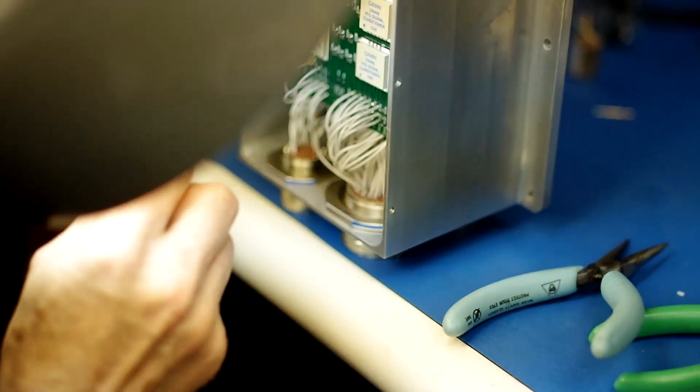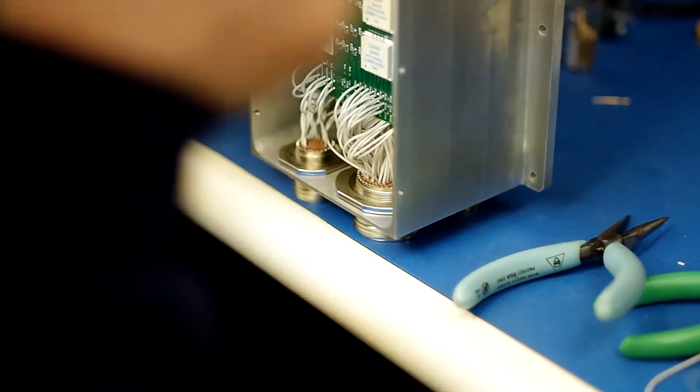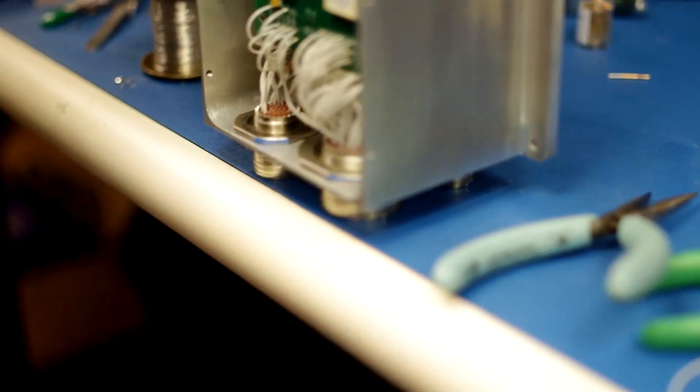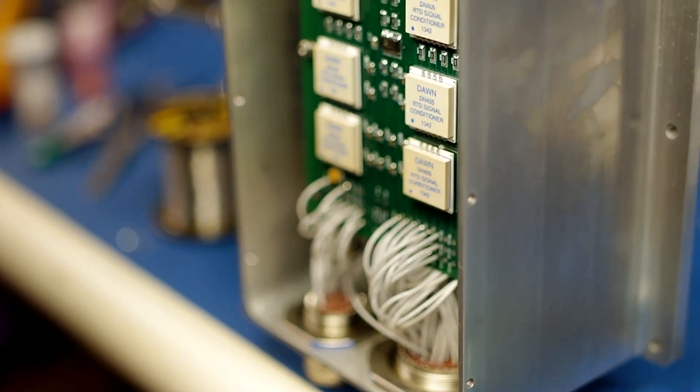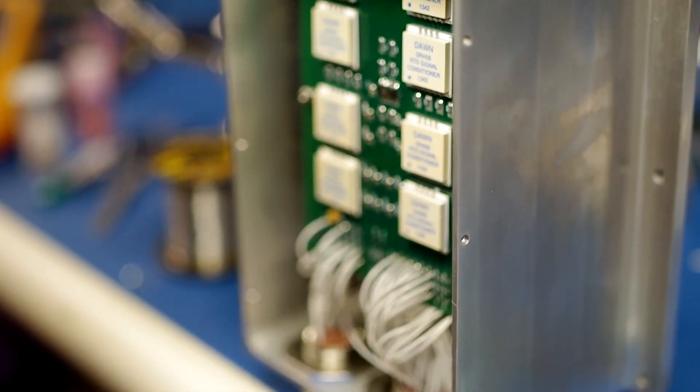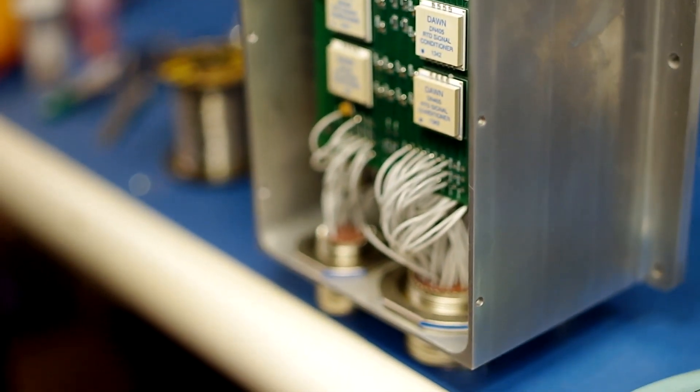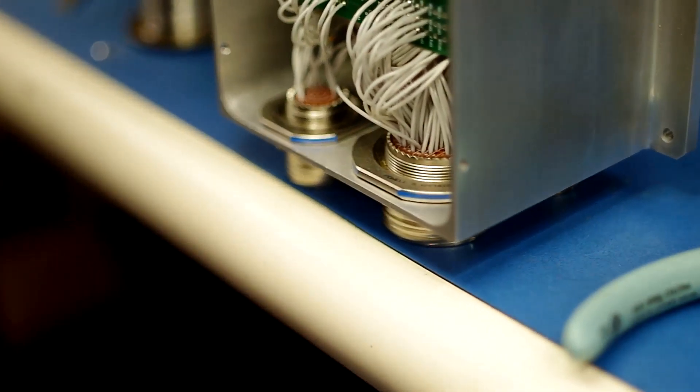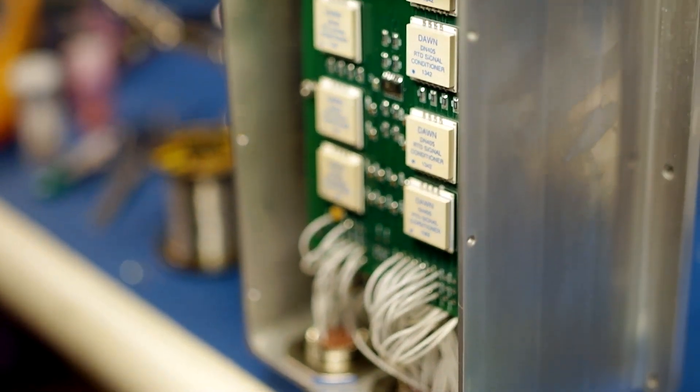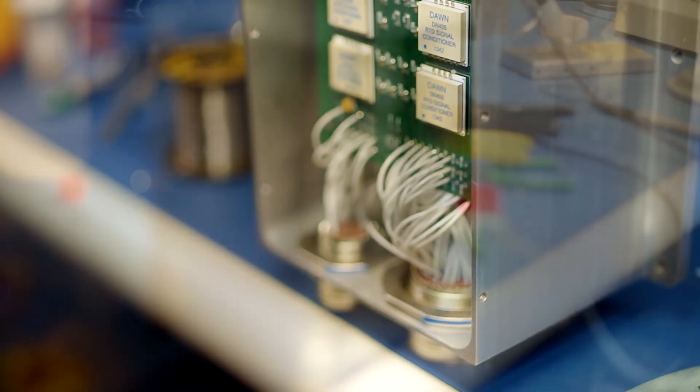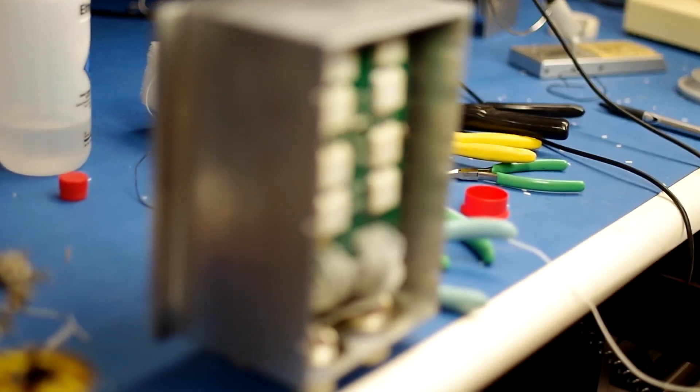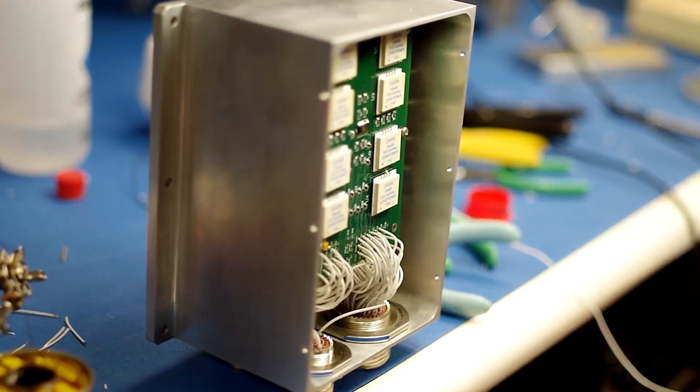Basically what I'm working on, this box here, is a RTD signal conditioner. And what we have on our program is a structural health and status kind of monitoring where we're looking at temperatures of various both electronics boxes and just basic structure. What this box is, it takes the RTD, which is a resistance thermal device, platinum RTD, 100 ohms, and converts that to just an analog 0 to 5 volt output.